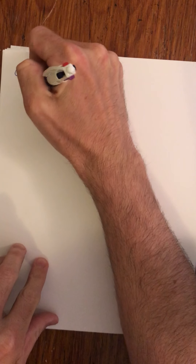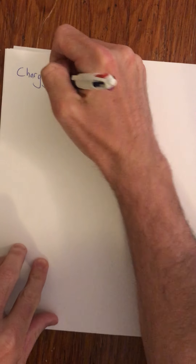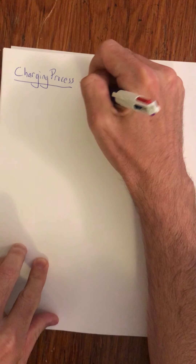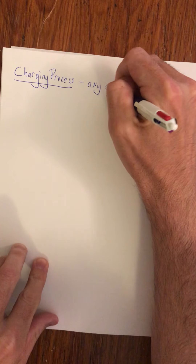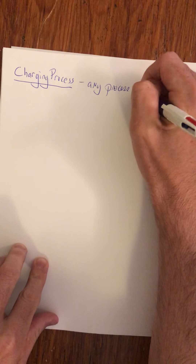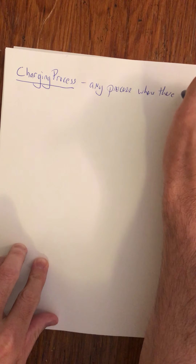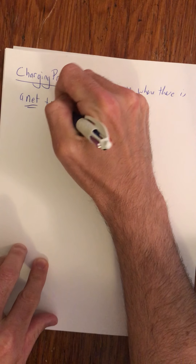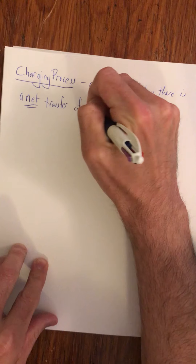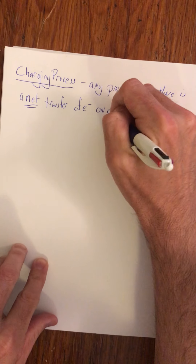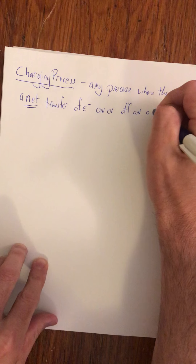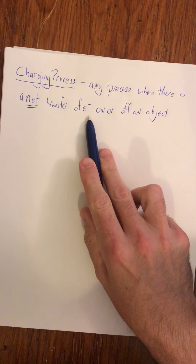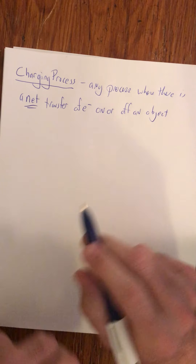What is a charging process? A charging process is going to be any process where there is a net transfer of electrons on or off an object. Net transfer on — the thing becomes negative; net transfer off — the thing becomes positive, assuming it's neutral to start with.